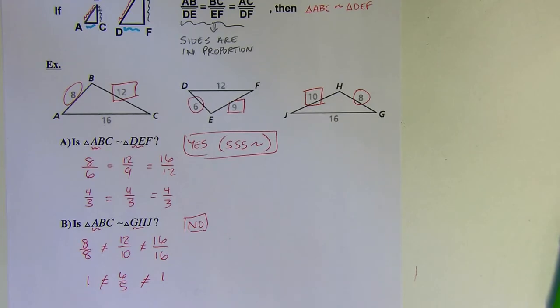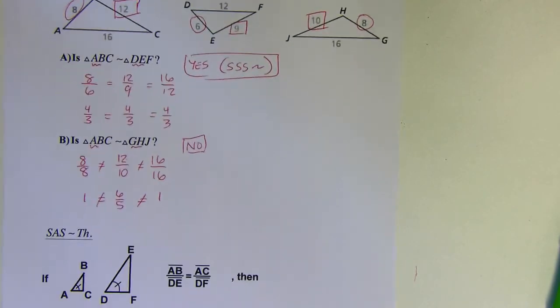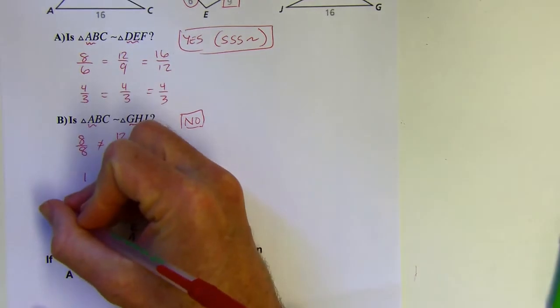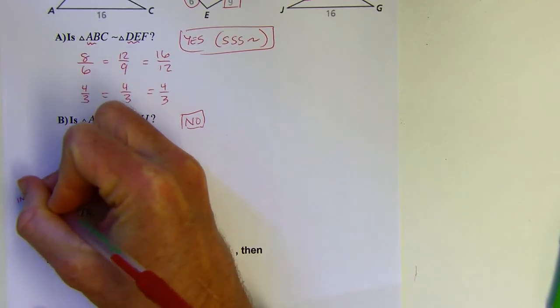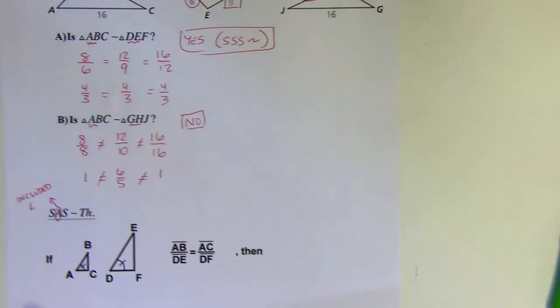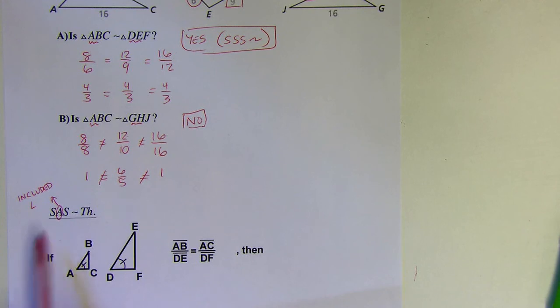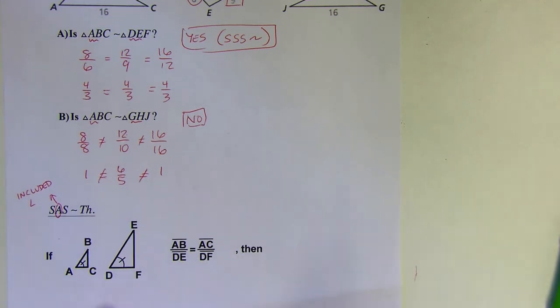All right. So next up, we've got the SAS similarity theorem. We had an SAS congruency theorem as well. And remember that the placement of the A is important. Because that means that this is going to be the included angle. It's the angle formed by those two sides. I need to have the A in between those two S's.